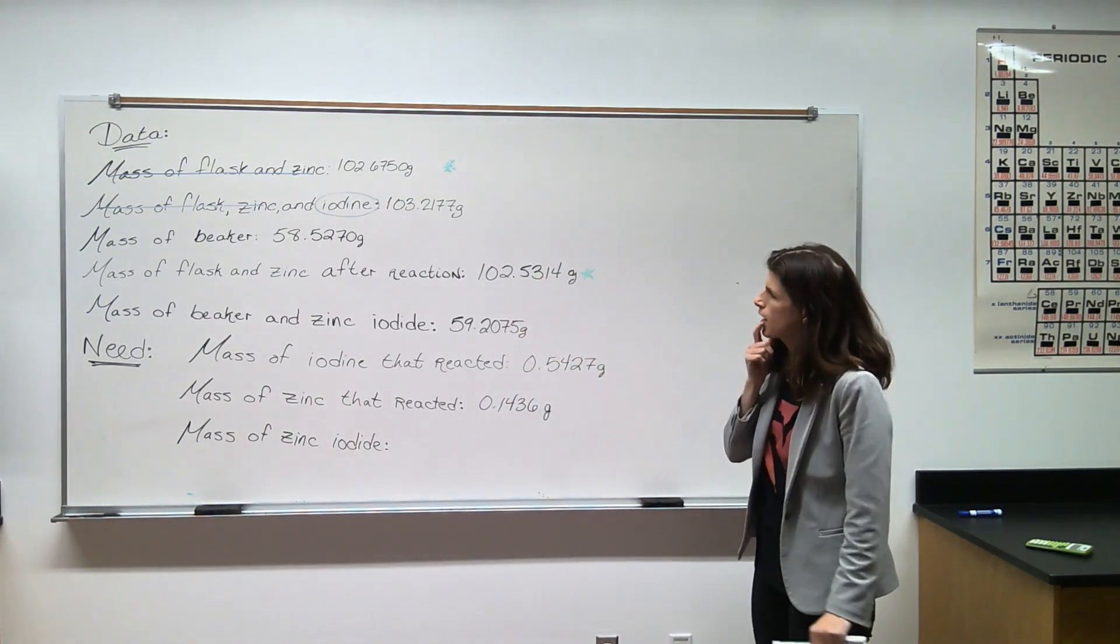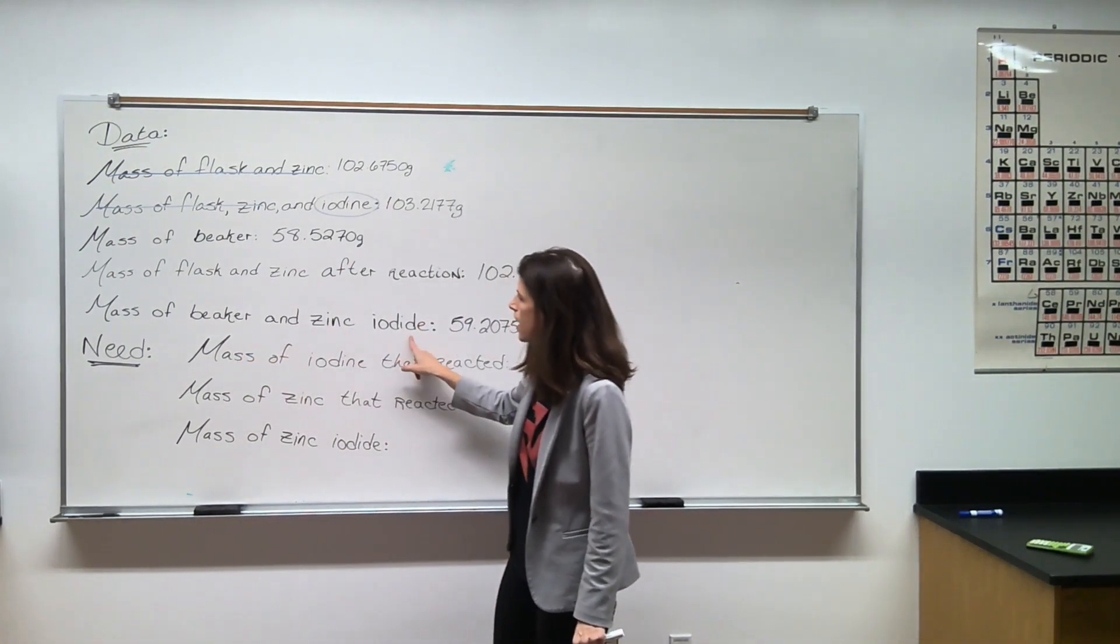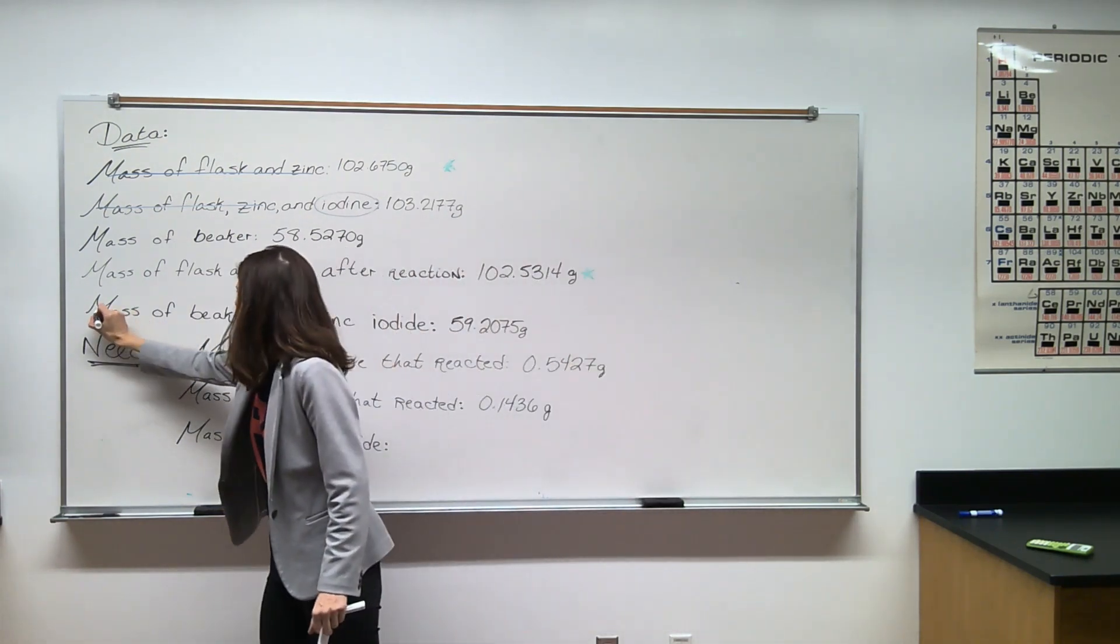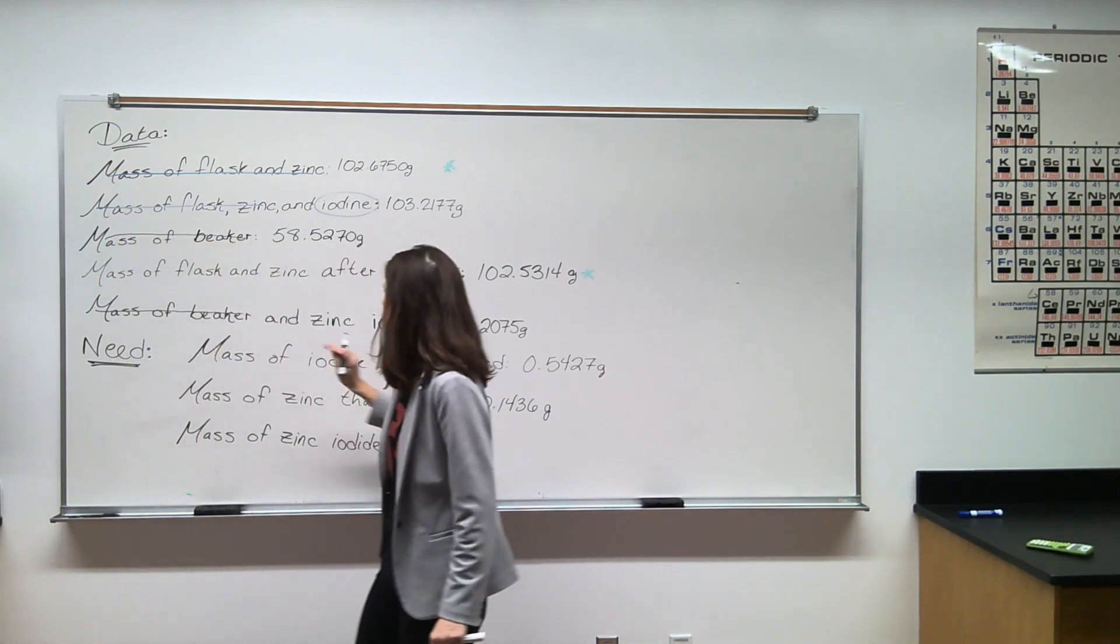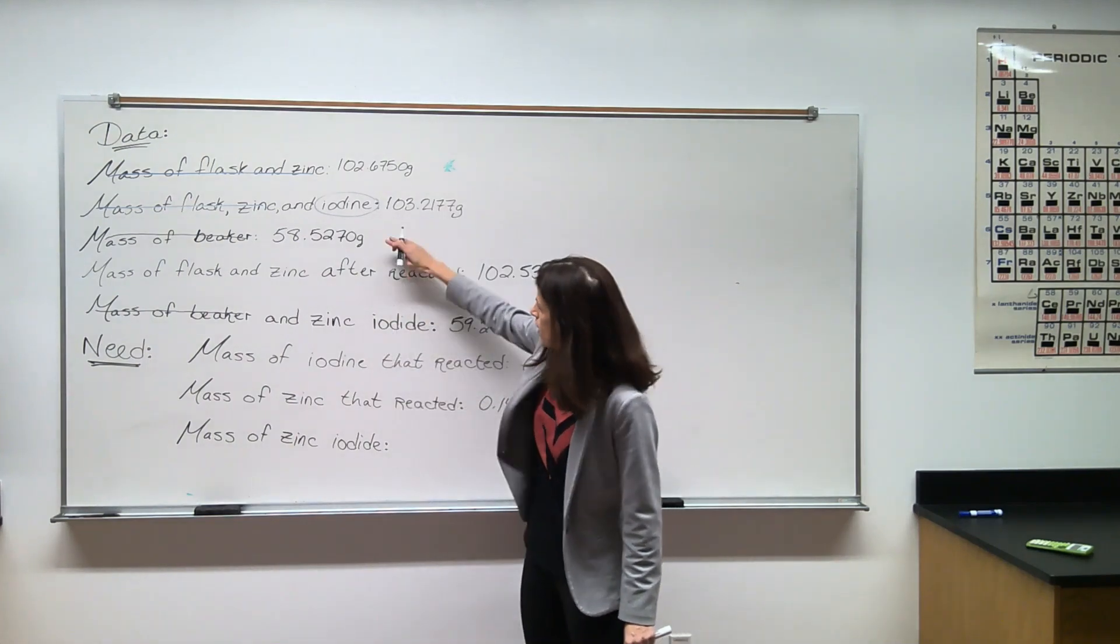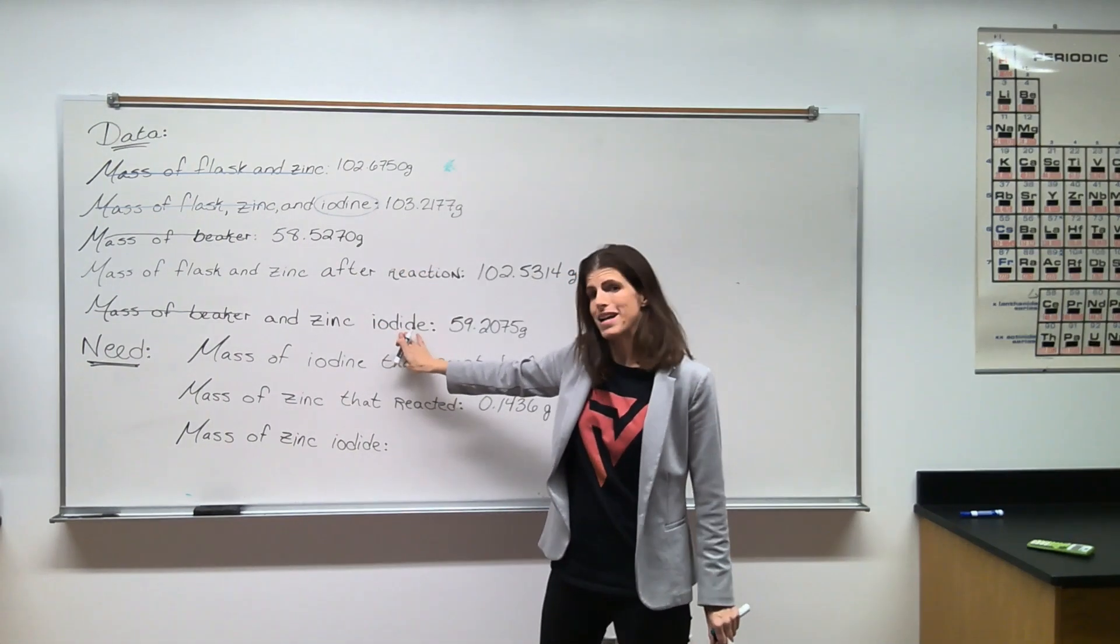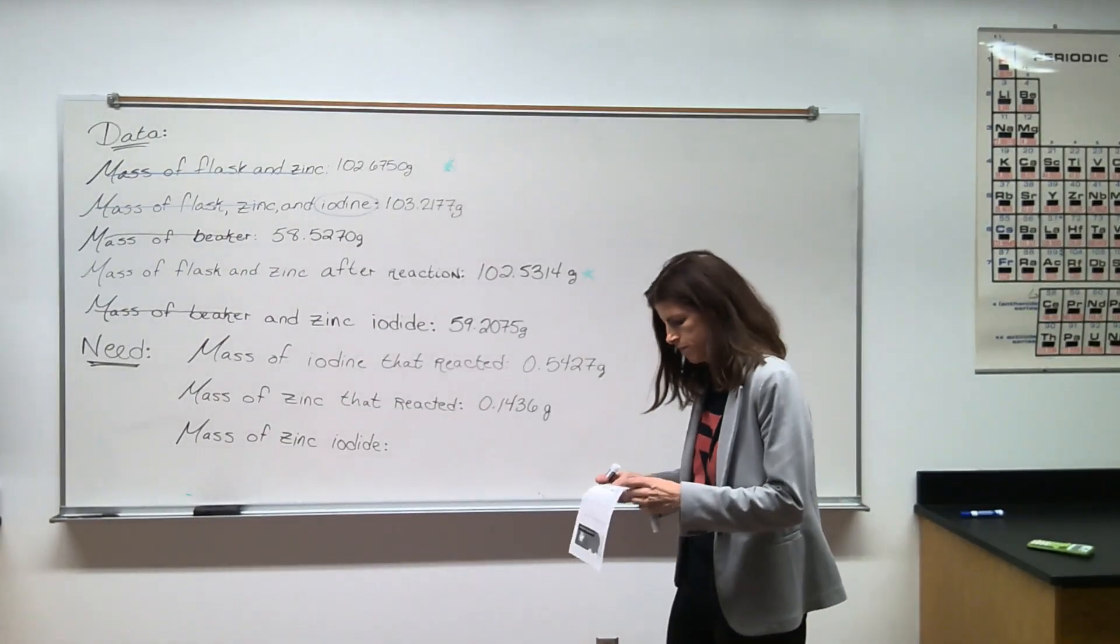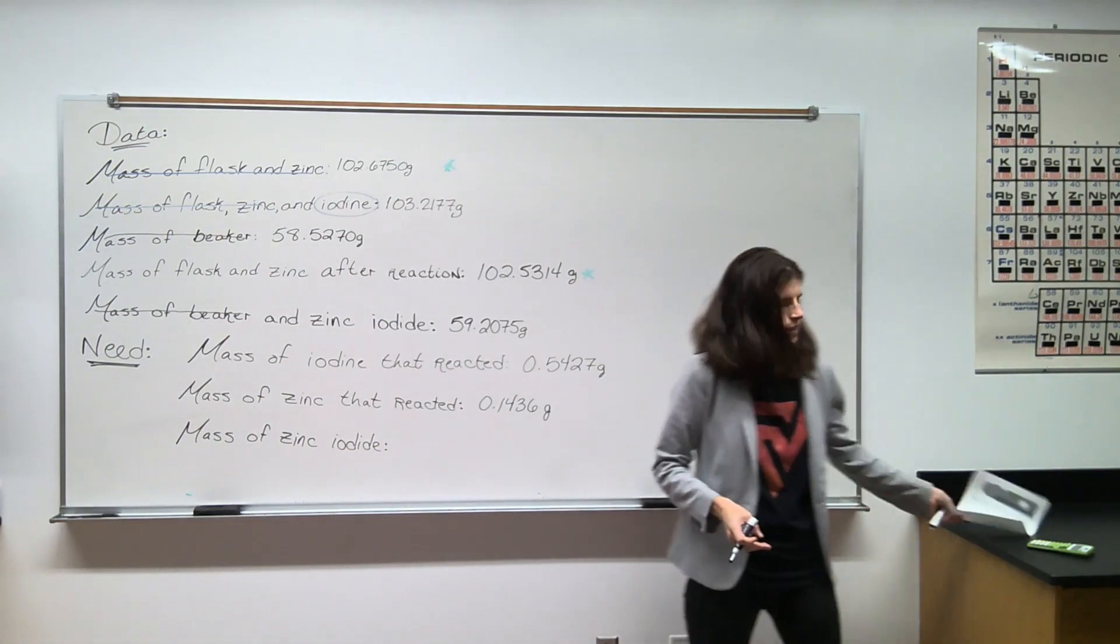Finally, for the mass of the zinc iodide, I have mass of beaker and zinc iodide, and I have the mass of the beaker. So again, comparing those lines, they both have the beaker in it, but the difference between those two lines is the zinc iodide. So if I subtract the line that says mass of beaker and the line that says mass of beaker and zinc iodide, that's going to give me the mass of my zinc iodide.